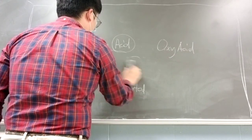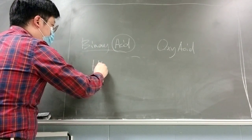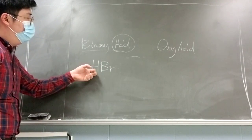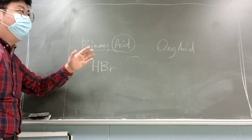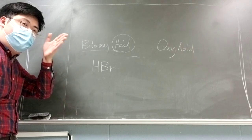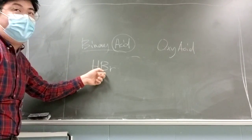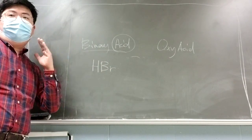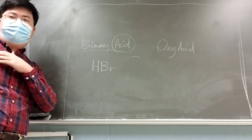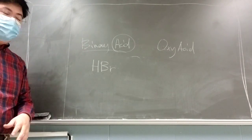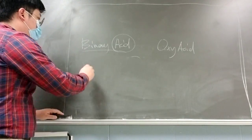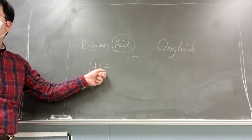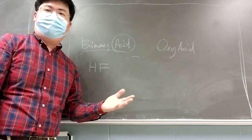Let's try another example: HBr. This is also a binary acid — one hydrogen, one bromine. In the nomenclature, hydrogen becomes 'hydro,' and bromine's ending changes to '-ic acid.' So HBr is hydrobromic acid. For HF — fluorine — it becomes hydrofluoric acid. That's all you need to know for binary acids.